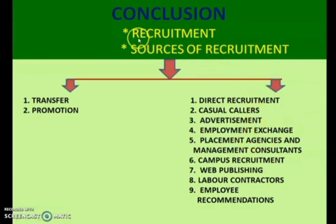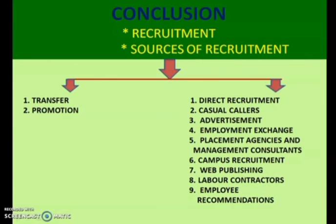Now let us conclude today's class. Today we saw what recruitment is and its definition. We saw that there are two sources of recruitment: internal sources, which include two main types — transfer and promotion — and external sources, in which we have studied nine different types. Hope you are going through the textbook regularly, reading the pages which we are dealing with in the lecture classes. Attend the test paper attached along with this session, and the YouTube URL is also provided so that you can have more information related to this topic. Meet you in the next class with a new process of staffing, that is selection. Till then, goodbye. Take care.